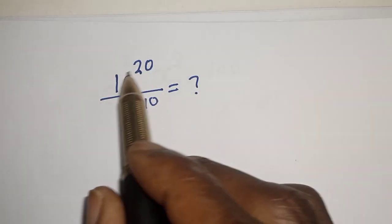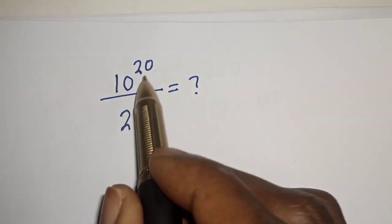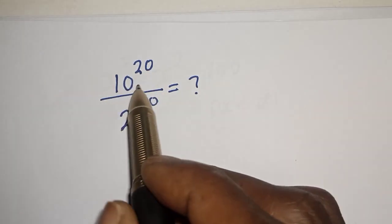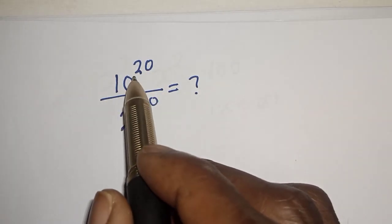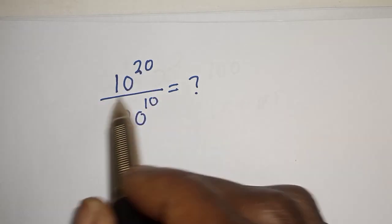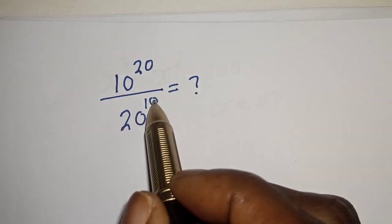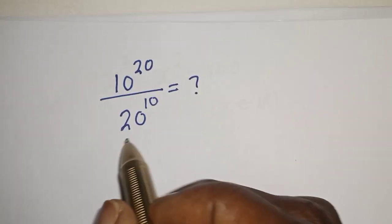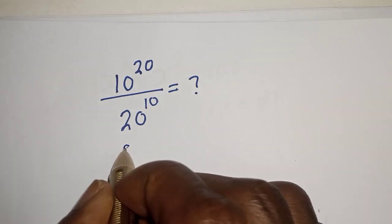Hello! How to simplify this nice math problem without using a calculator: 10 raised to the power 20 divided by 20 raised to the power 10 is equal to what? Solution: